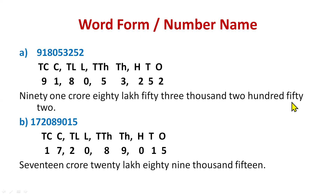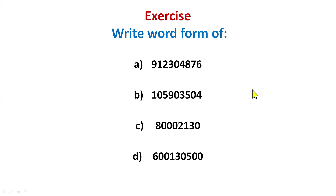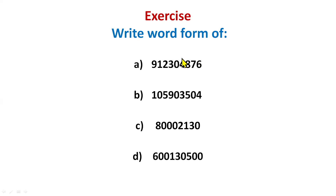Now it's your time to do some workout. Remember the steps: first insert the commas and write the places above the digits, starting from the rightmost digit. Above 6 write ones, then tens, hundreds, thousands, ten thousands, lakh, ten lakh, crore, ten crore. Insert the commas — three digits, two digits, two digits — then write the full answer in the comment section.